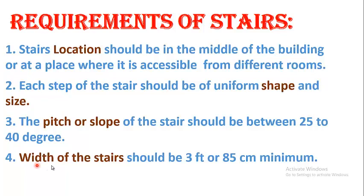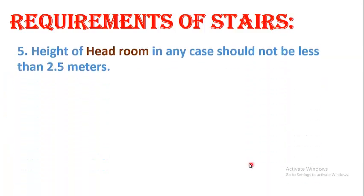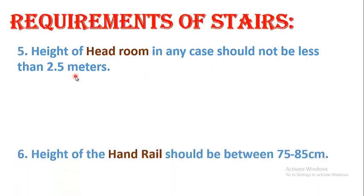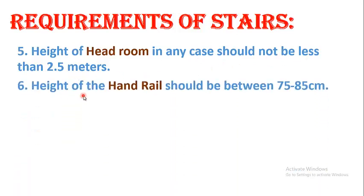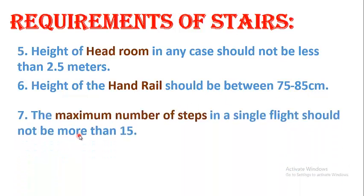Point 4 — Width of the stair should be 3 feet or 85 centimeters minimum. Point 5 — Height of the headroom: the height of the headroom in any case should not be less than 2.5 meters. Point 6 — Height of the handrail should be between 75 to 85 centimeters.